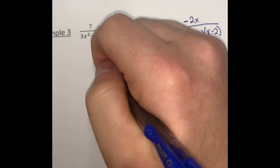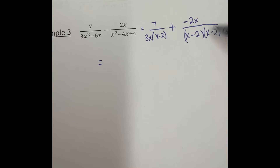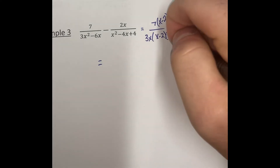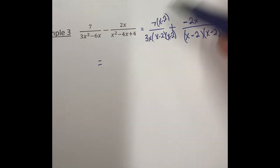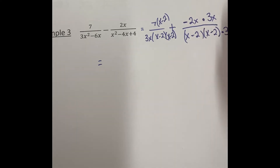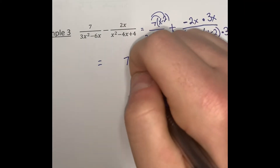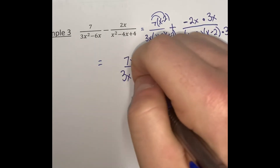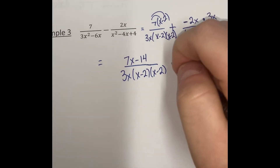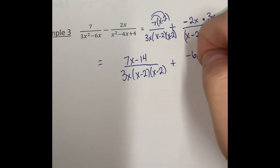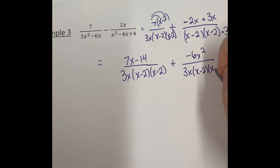At this point we want to get the denominators the same. This has one x minus 2; this has two x minus 2s. So we need to multiply this by an additional x minus 2. This has two x minus 2s but is missing the 3x, so we would need to multiply the top and bottom by 3x. We can distribute the 7 to get 7x minus 14. Our denominator would be 3x times x minus 2 times x minus 2.